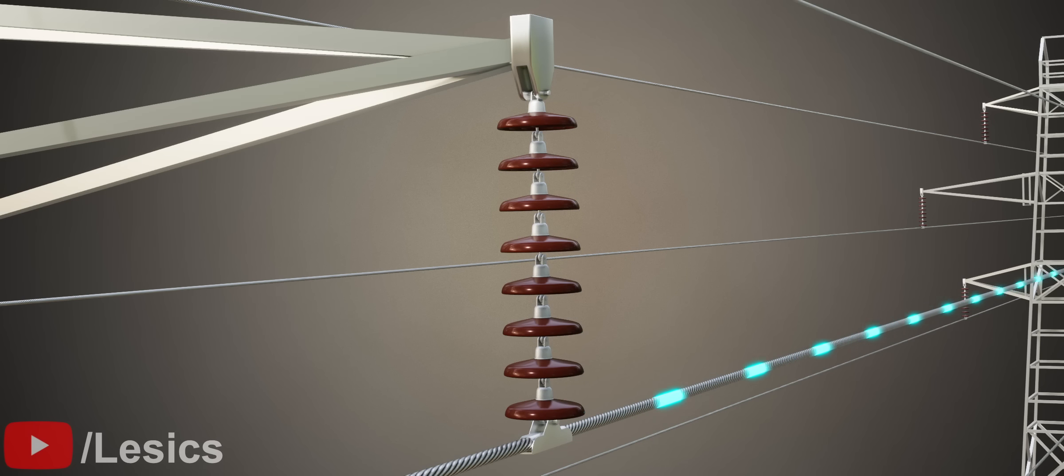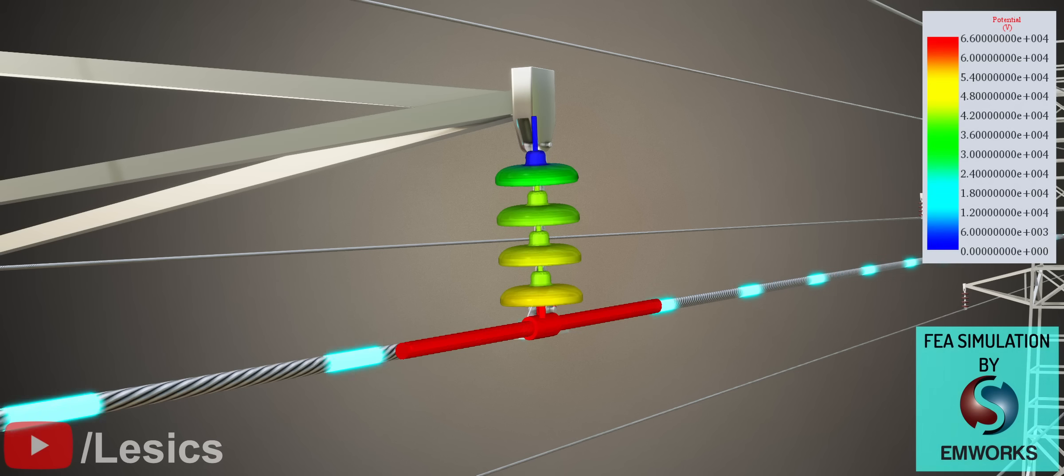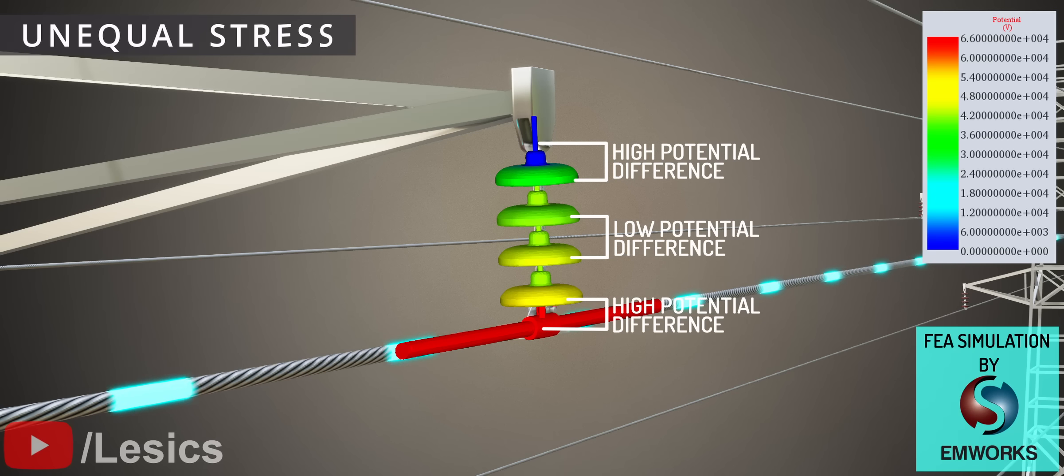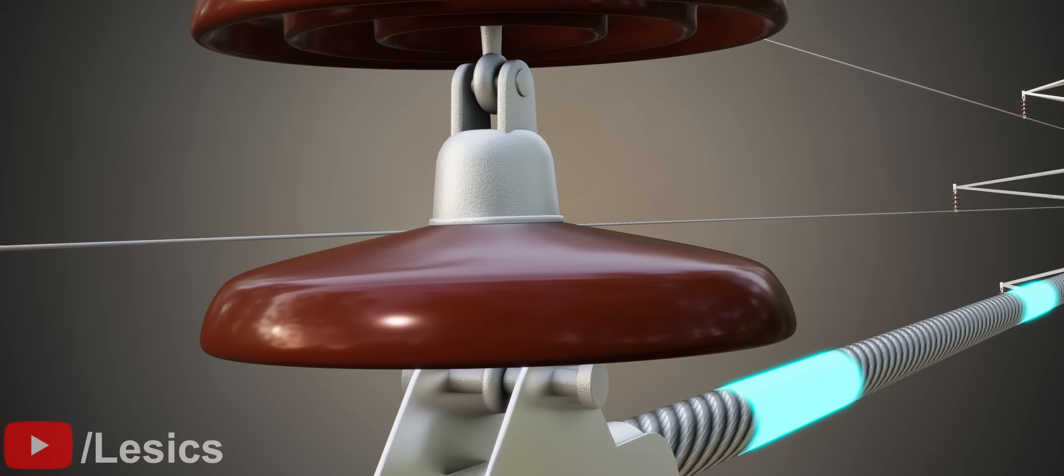To get clear results, we are reducing the number of disks. And let's do an FEA simulation once again with the help of EMWorks. You can see from this result that there is an unequal voltage distribution between these disks, which causes unequal stress.